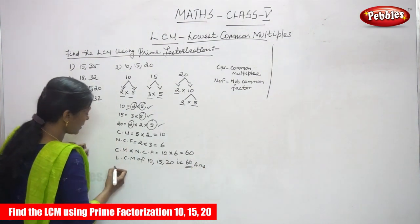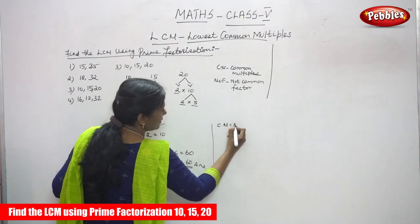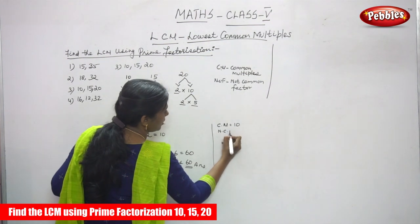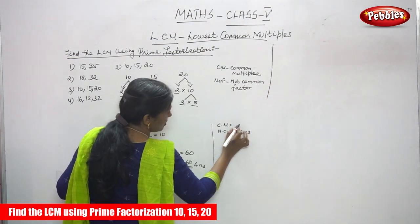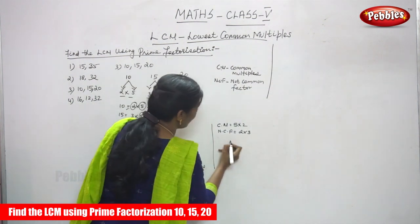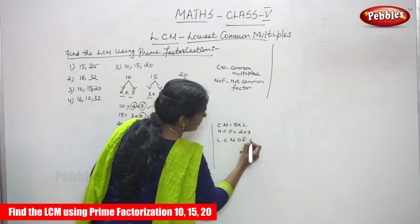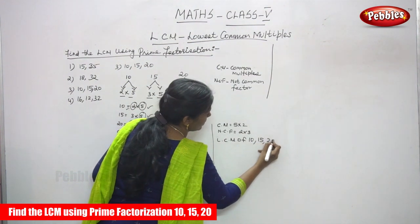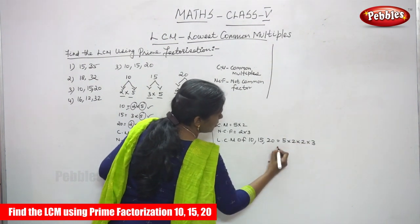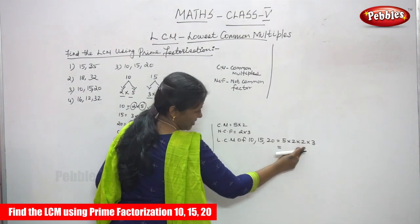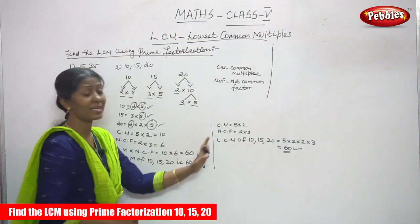The same problem can also be done in a slightly different method. You write all the prime factors together. The common multiples are 5 and 2, and the not-common factors are 2 and 3. So LCM of 10, 15, and 20 equals 5 into 2 into 2 into 2 into 3. Calculating: 5 into 2 is 10, 10 into 2 is 20, 20 into 3 is 60. So the answer is 60 in both methods.